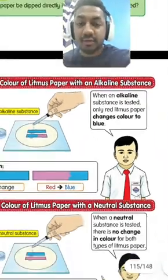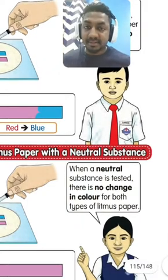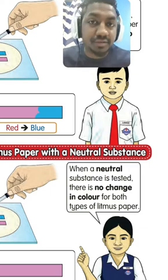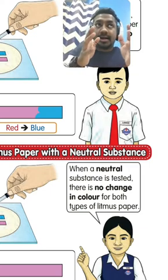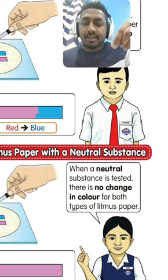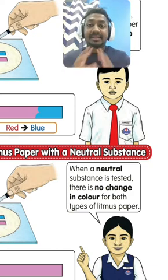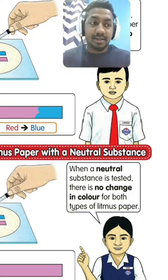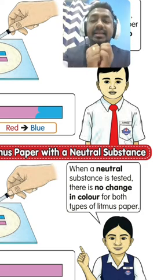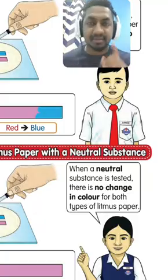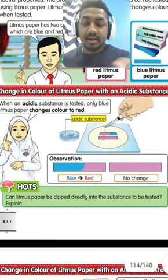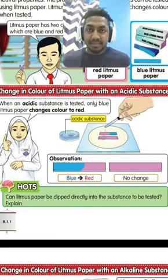For neutral substances, when tested there is no change in color for both types of litmus paper. For example, water — if you put the red litmus paper and blue litmus paper into water, there is no color change in either. If there is no change in both litmus papers, it means the substance is neutral.